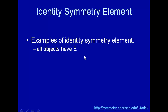Here we're going to talk about the five symmetry elements of point groups. They are the identity operator, inversion, rotation, reflection, and combination rotation and reflection.